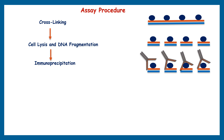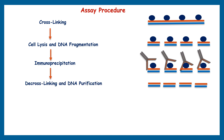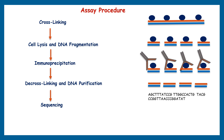The protein-DNA complexes are then subjected to a process that breaks the cross-links and separates the DNA from the proteins. In this step, we collect the DNA fragments that were originally bound to the protein of interest. These isolated DNA fragments are then subjected to high-throughput DNA sequencing, generating a large dataset of short DNA sequences — called reads — that represent the regions of the genome where the protein was bound.